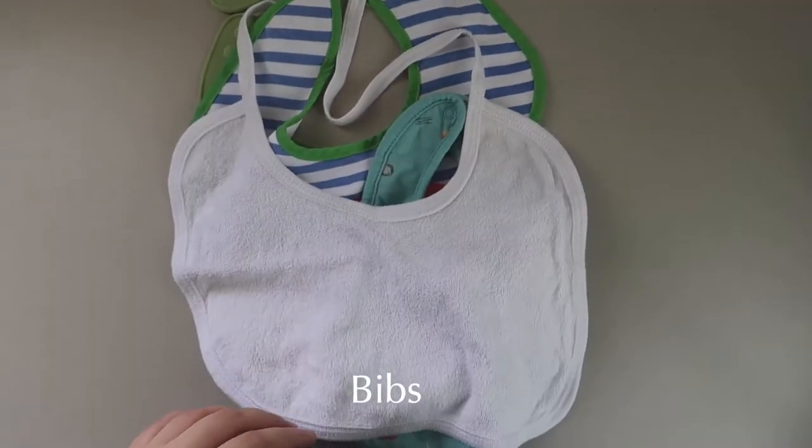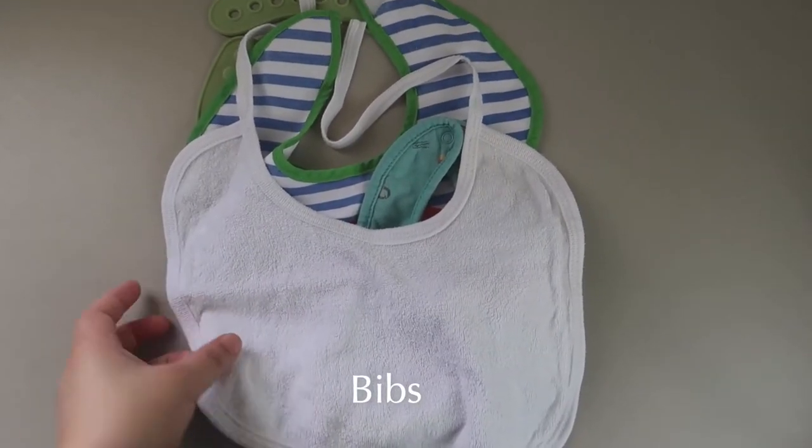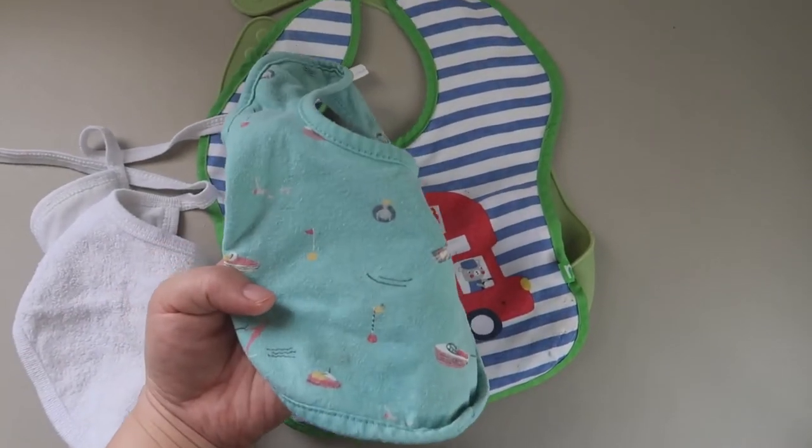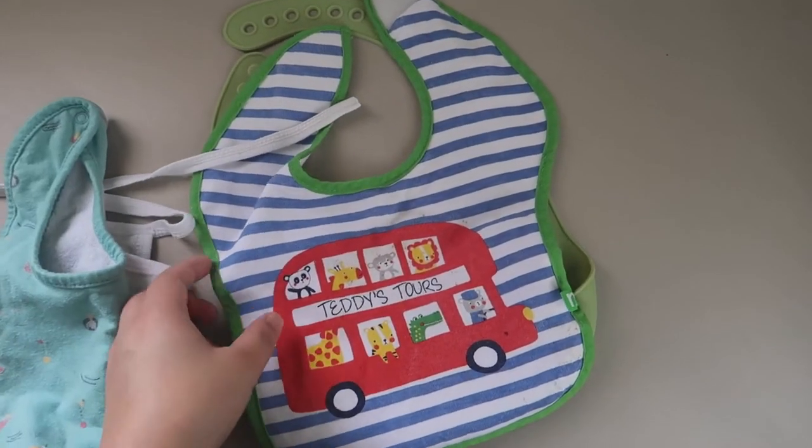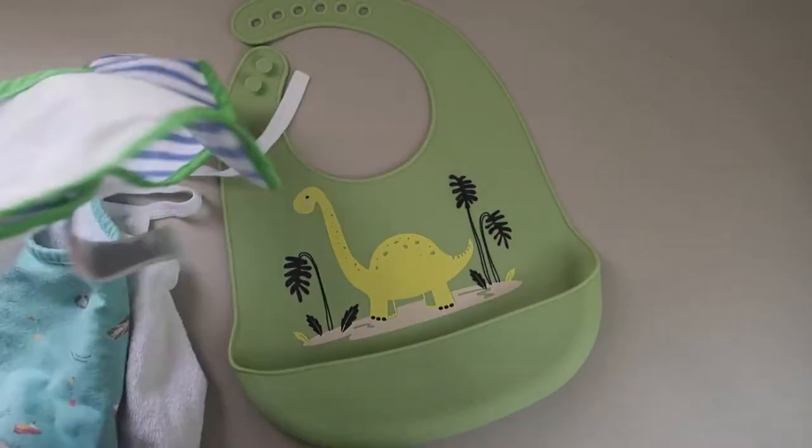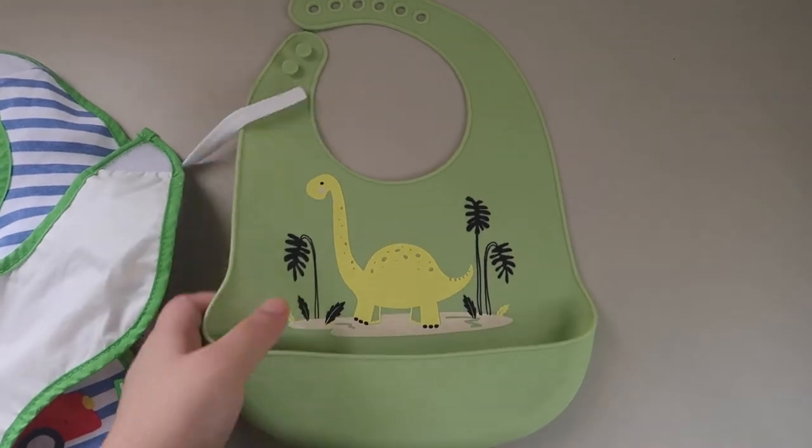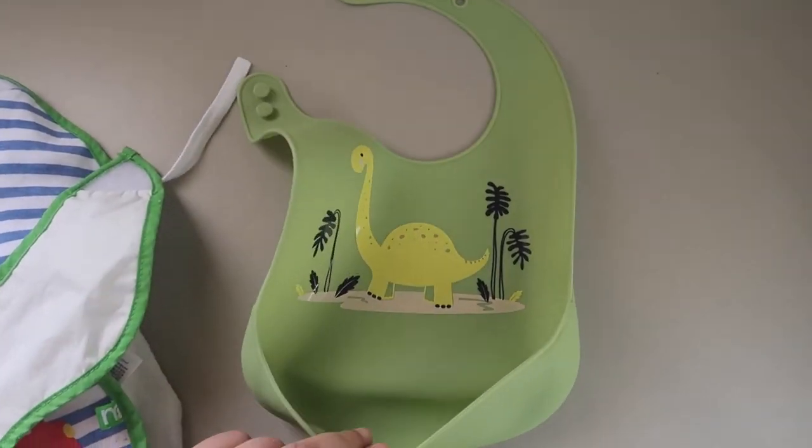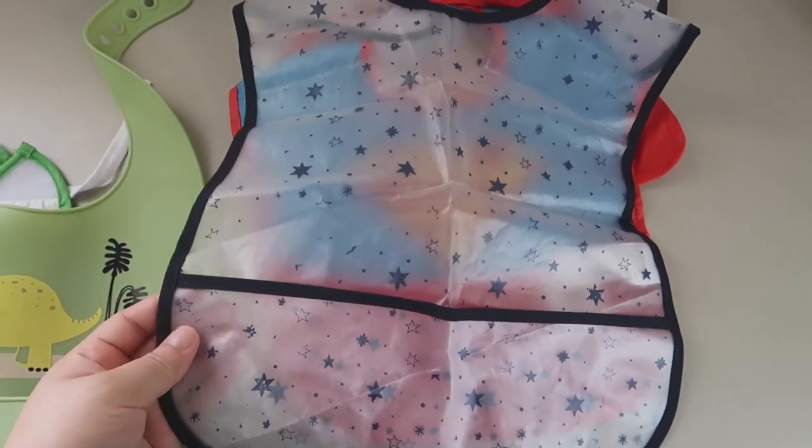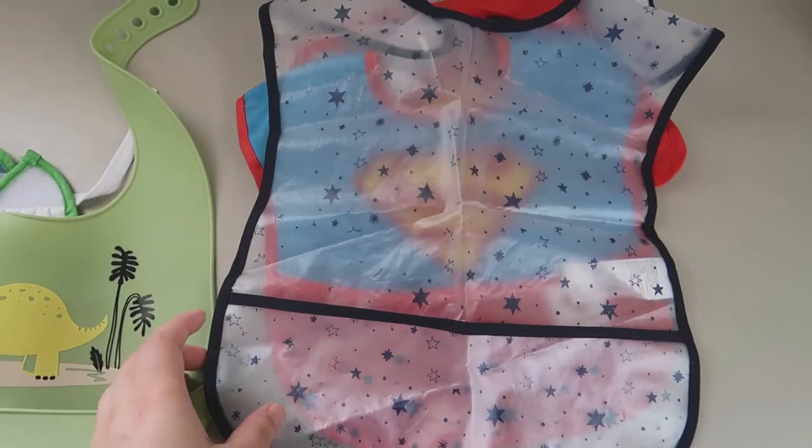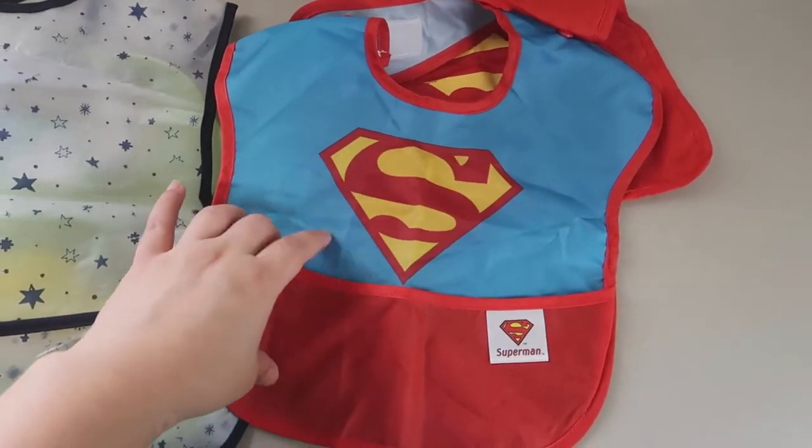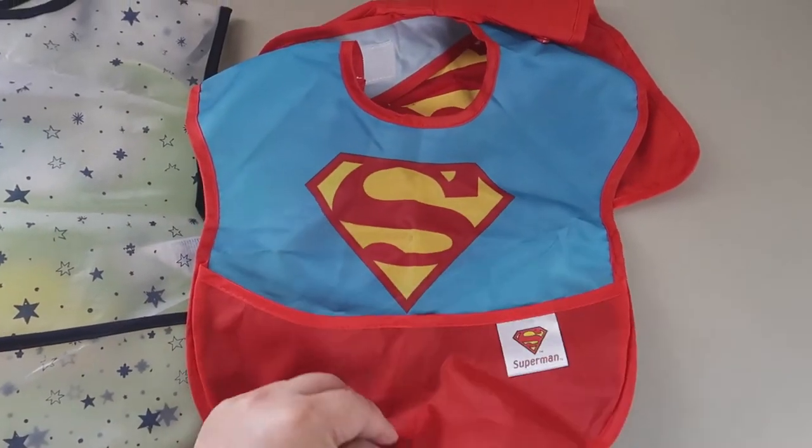Next on the list are bibs. So I have a lot. Meron ako ng simple white bib, colorful bib, and then yung mga may design na bib na may parang plastic silicone so hindi mababasa si baby. I also have this silicone bib na mayroong pocket, itong parang plastic na may pocket din, and ito yung Superman na binili ko for my baby kasi nakutan lang ako talaga sa kanya.